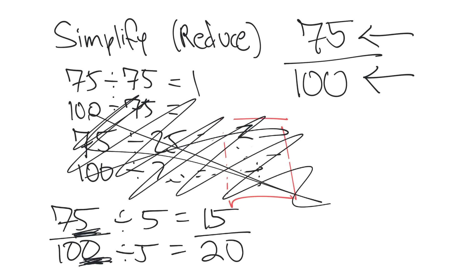So how do we reduce this further? Well, same scenario as before. We see a 5 and a 0, so we can just divide by 5 once again, and we'll get 15 divided by 5 equals 3, and 20 divided by 5 equals 4. And that is the most reduced we can go from 75 over 100 to 3 over 4.